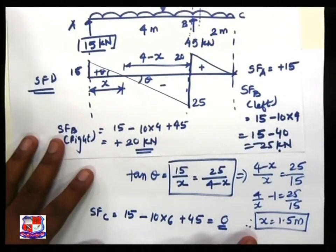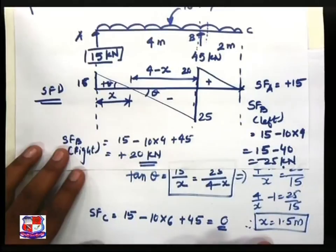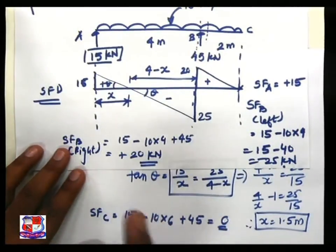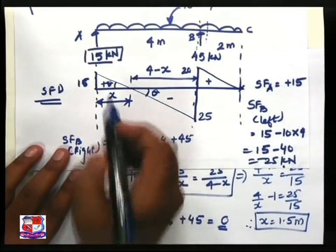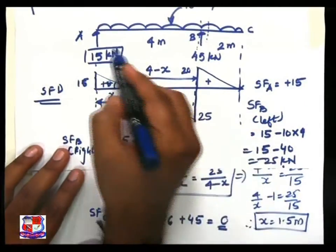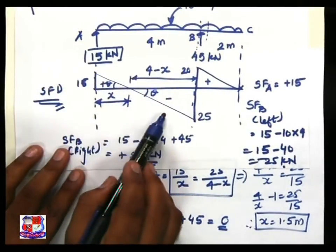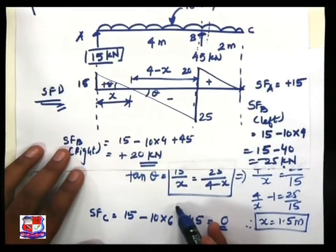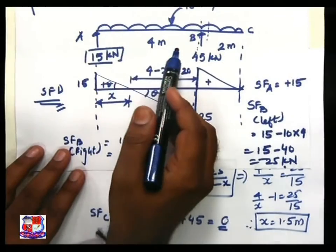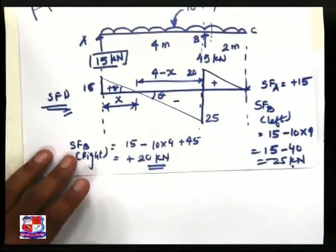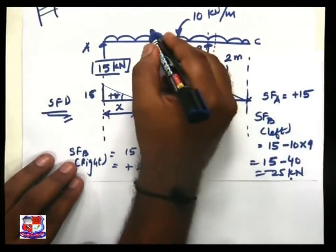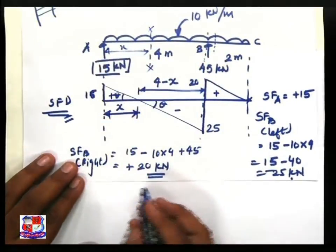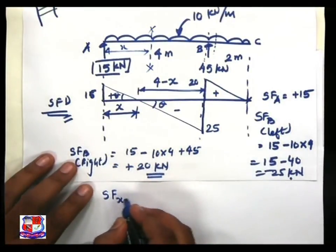You can achieve the same answer x = 1.5 m by taking a section between A and B. This method of simple mathematics is applicable when there is a linear relationship in the shear force diagram. If a non-linear relationship — like a parabola — is present, then we cannot use this mathematical concept. So let us use the fundamental section method to find x: visualize taking a section at distance x, and write the equation: shear force at x equals...